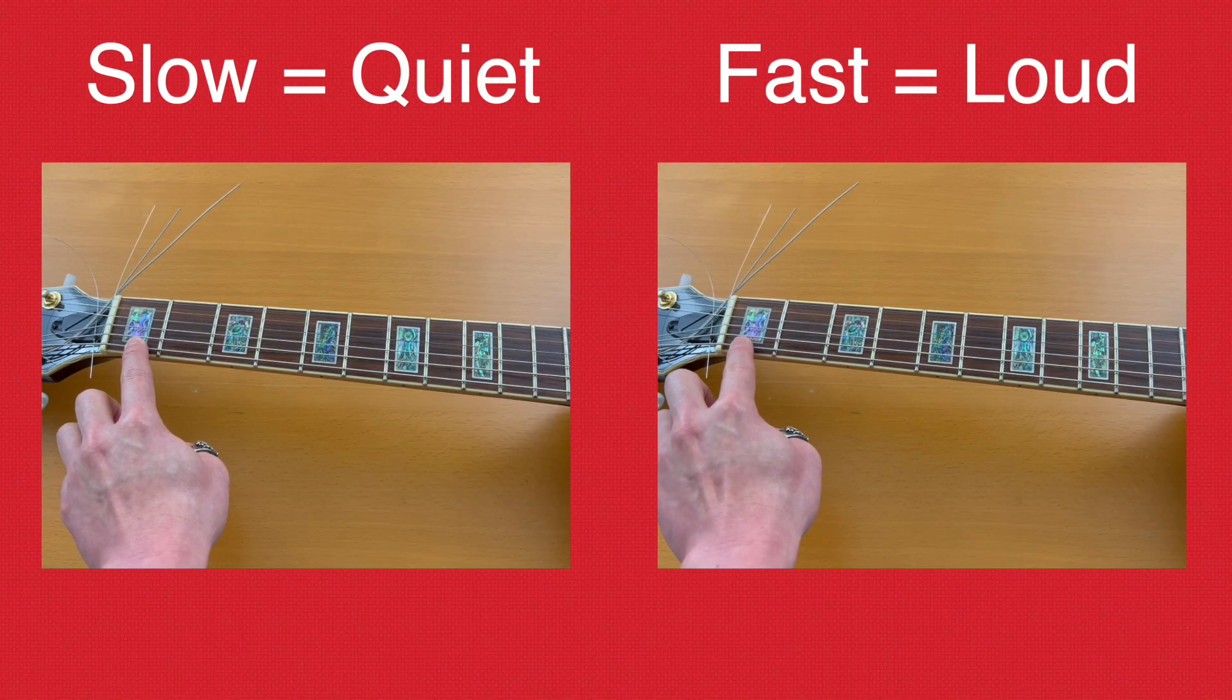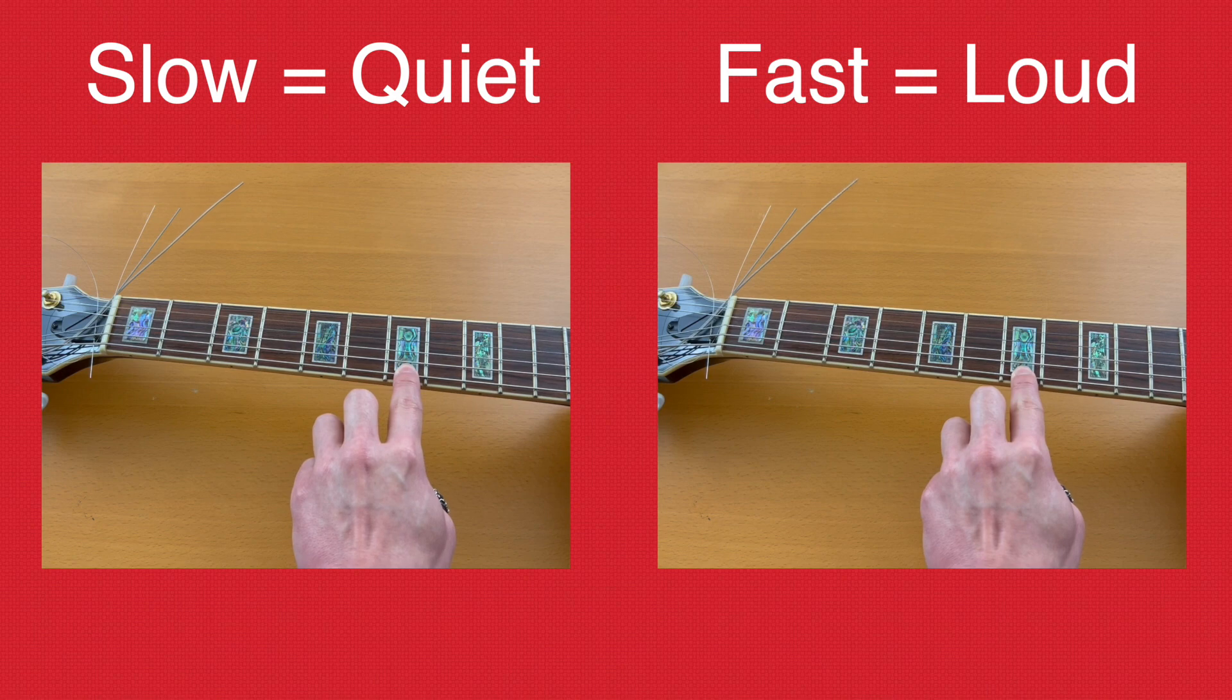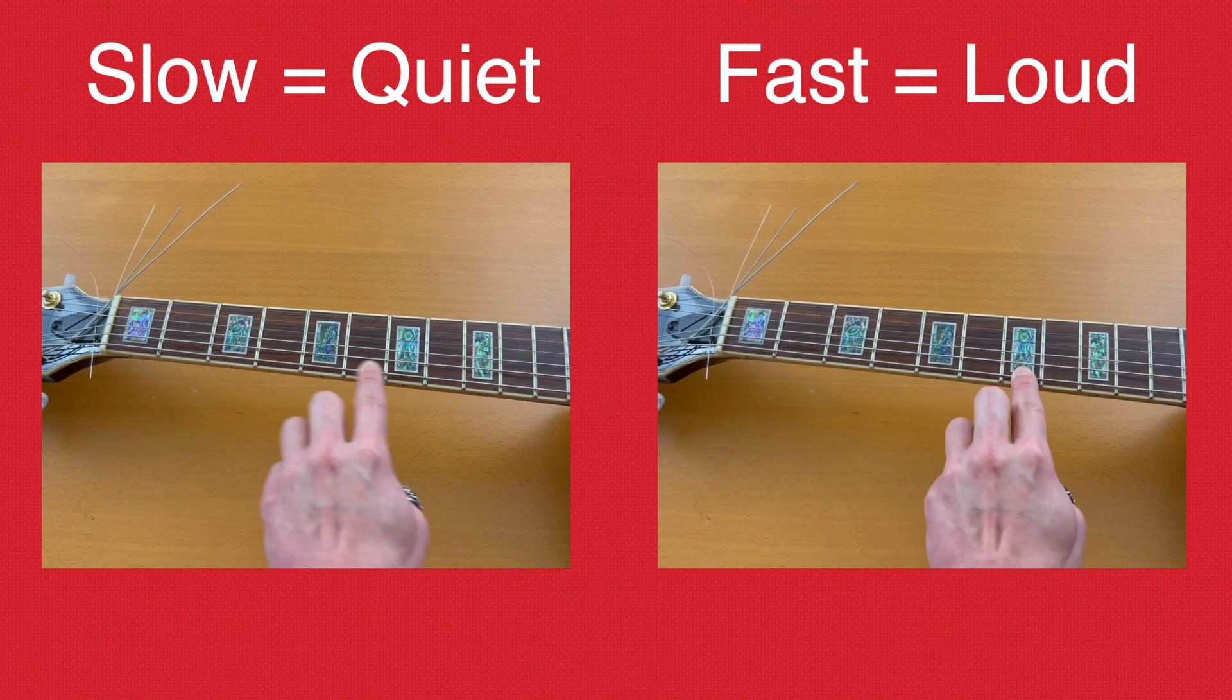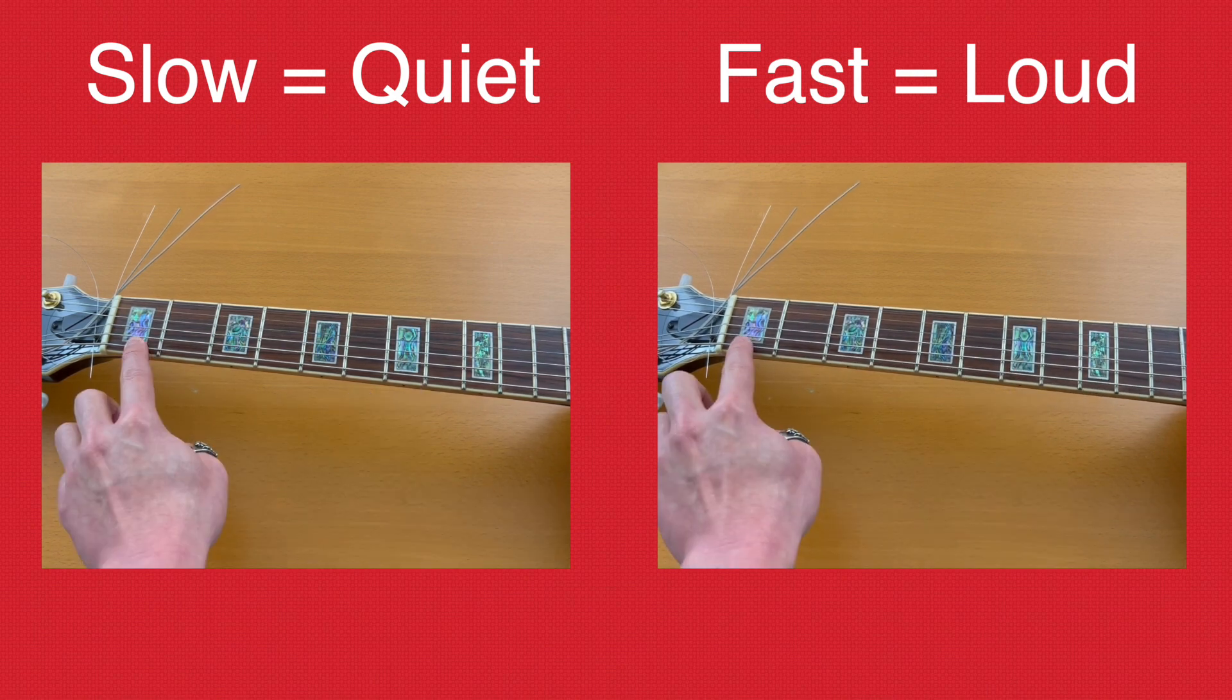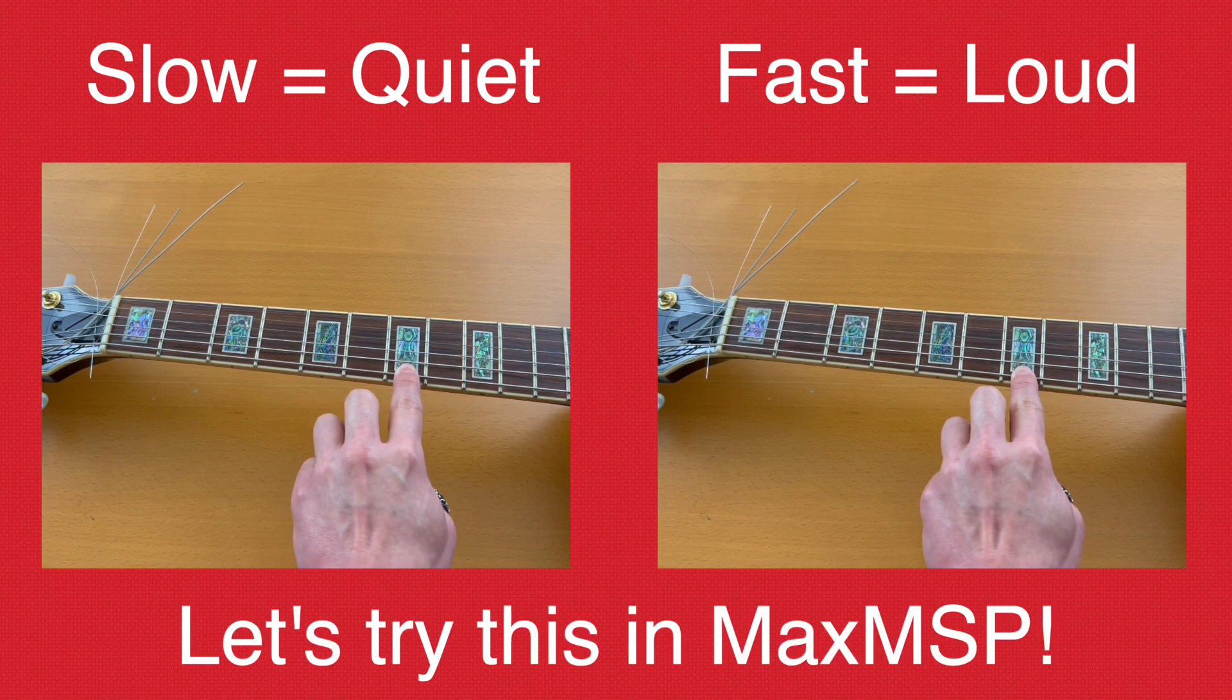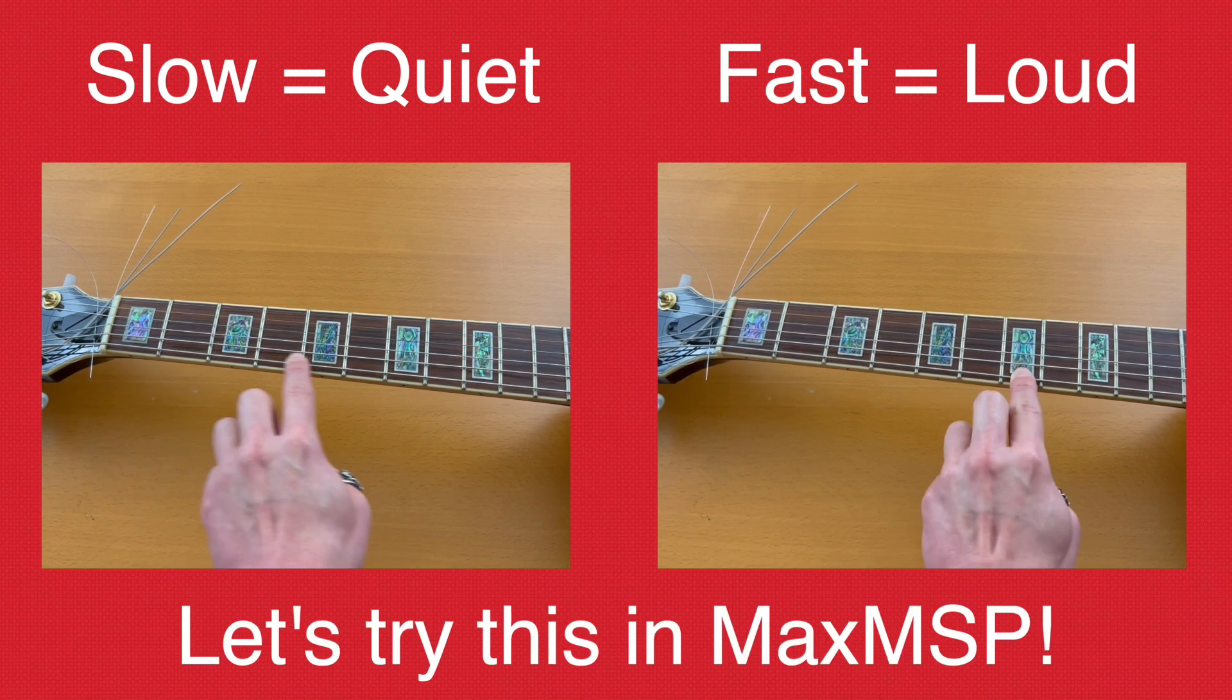As we can hear, the speed of the finger movement affects the loudness. When I slide faster, the guitar sound is louder and vice versa. Awesome! So we should be able to do something similar with the ribbon sensor.